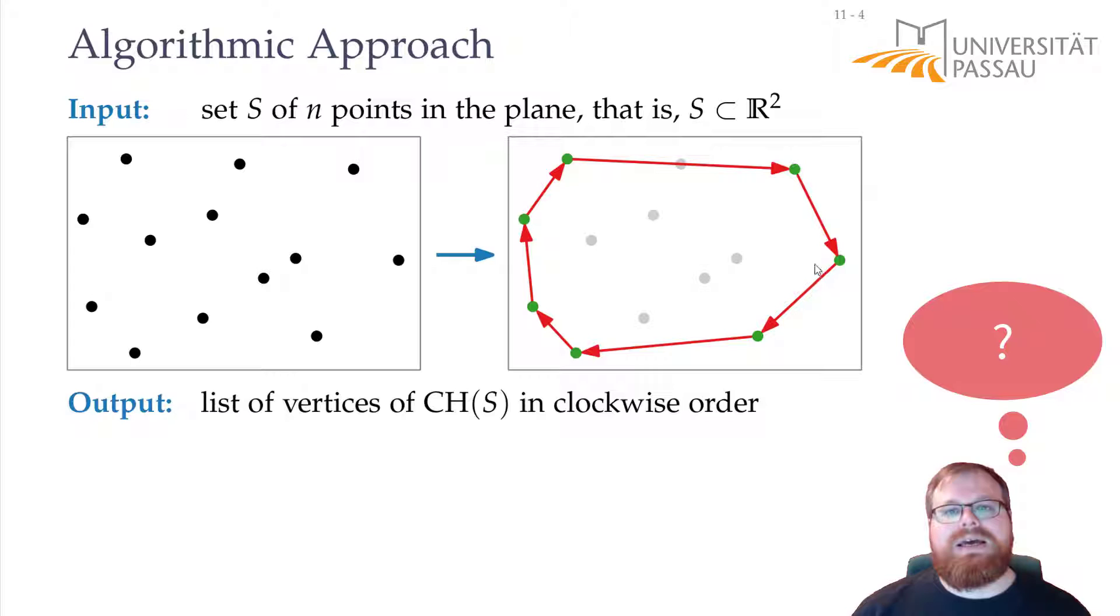Can you give me a property of these edges? If I give you just two points, how can you decide if the connection between them is an edge of the convex hull or not?